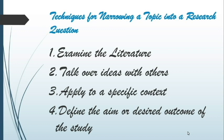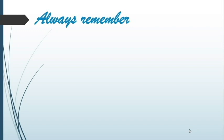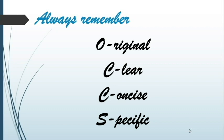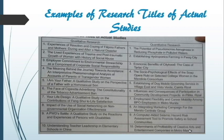In writing a research title, always remember OCCS: O for original, C for clear, another C for concise, and S for specific. OCCS should be applied to create a good research title that reflects your paper. Your research title must clearly reflect the topic of your investigation. Here are examples of titles of specific studies in both quantitative and qualitative research.